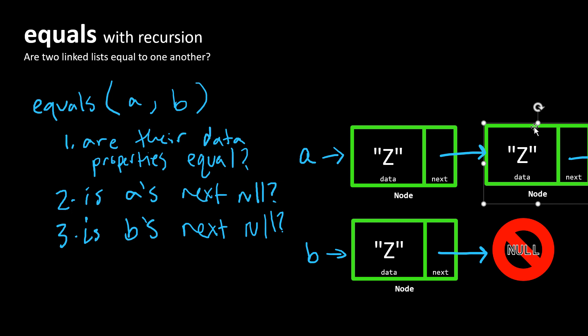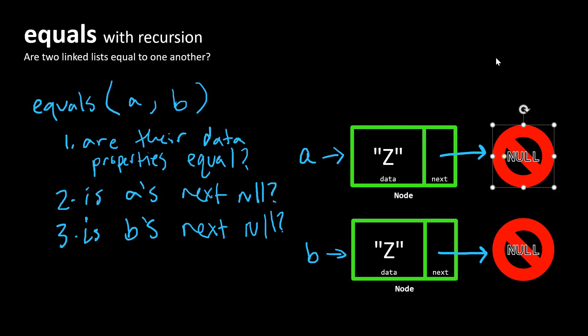And you can kind of infer that the same thing could be true if B was longer than A here and B actually had another node as a part of it. We would have the same problem for condition three.